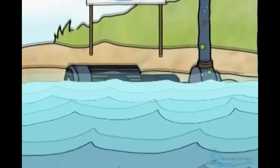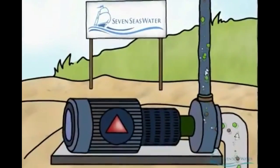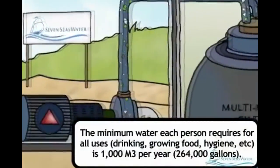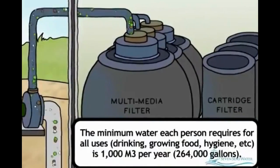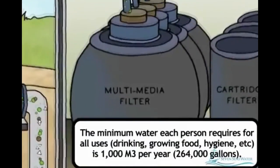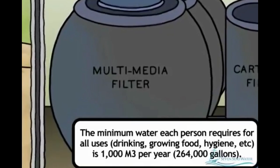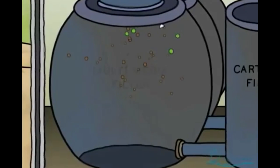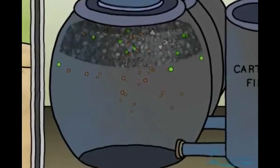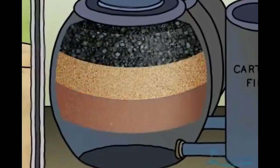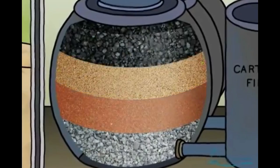To protect the reverse osmosis membranes from becoming clogged by solid particles that can be suspended in the seawater, the seawater is filtered before passing through the membranes. This is accomplished by using multimedia filters, which are tanks or vessels containing a series of layered granular materials. These materials can be anthracite, garnet, sand, pebbles, and/or gravel, which are assembled in layers.